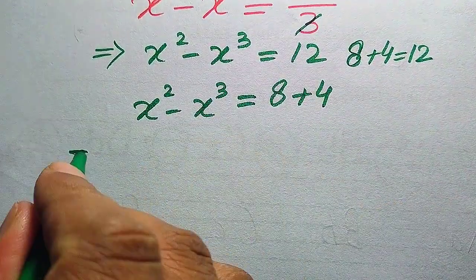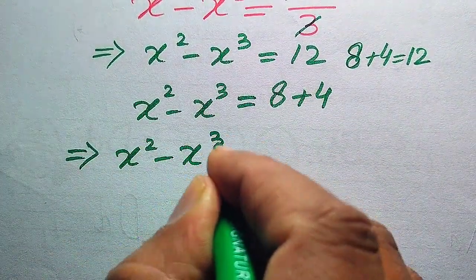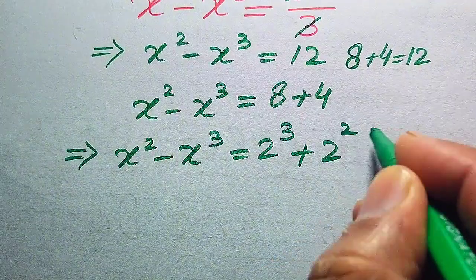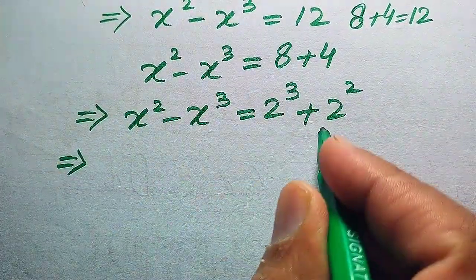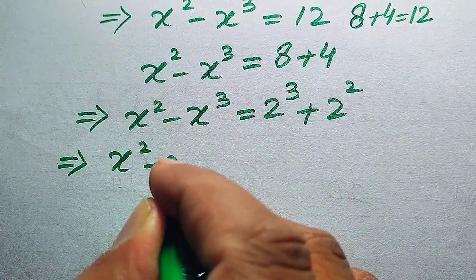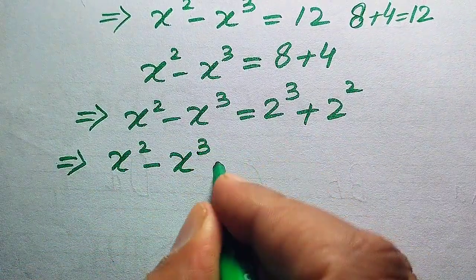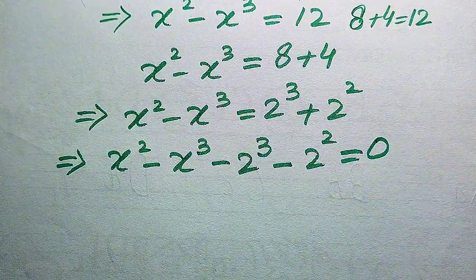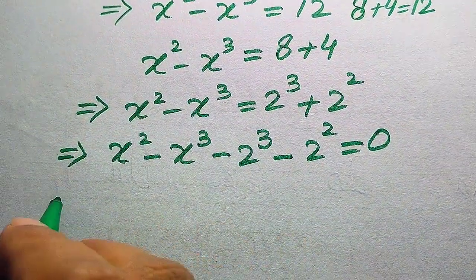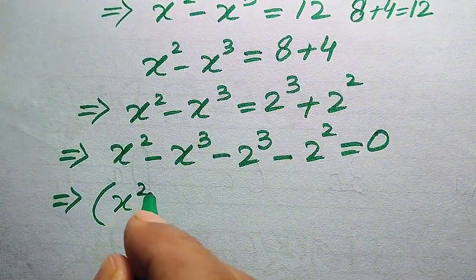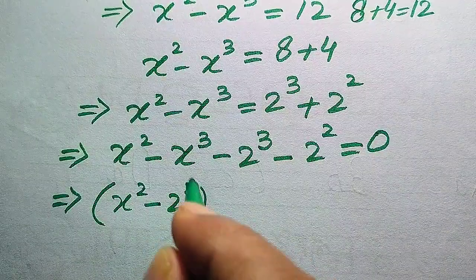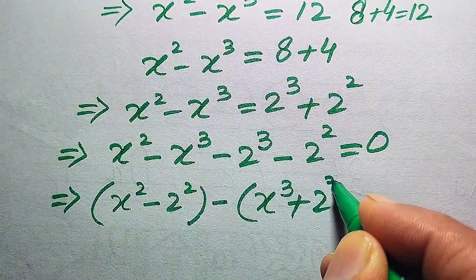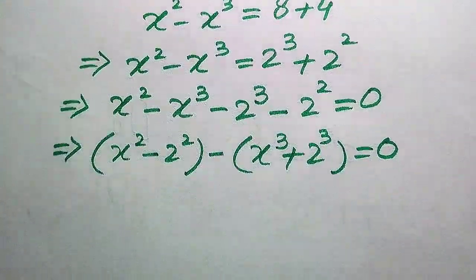We rewrite the right-hand side: 8 is written as 2 cubed, and 4 is written as 2 squared. Then we move both terms from the right-hand side to the left-hand side — positive terms become negative — giving us X squared minus X cubed minus 2 squared minus 2 cubed equals 0. Now we pair the square terms together: X squared minus 2 squared, and take out a negative sign to get negative of (X cubed plus 2 cubed), all equal to 0.